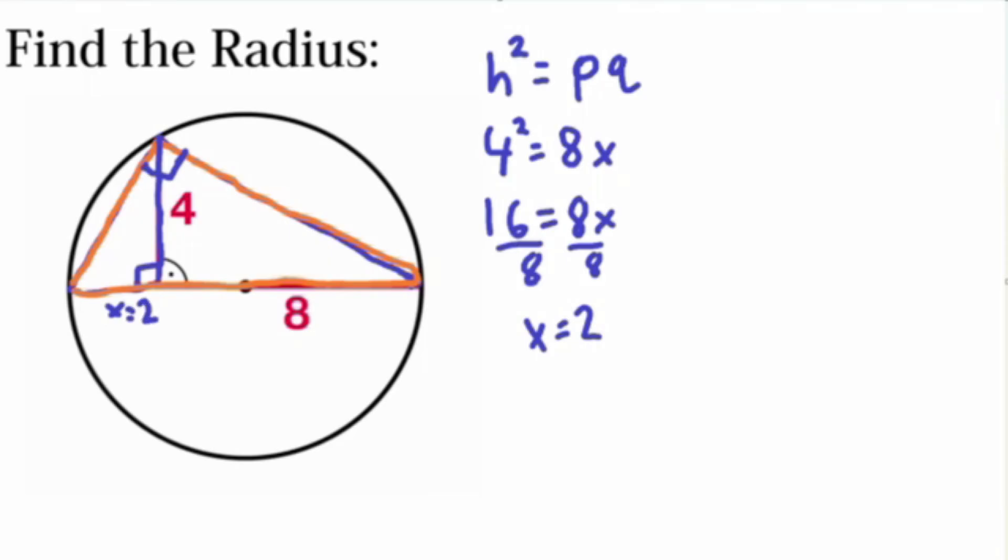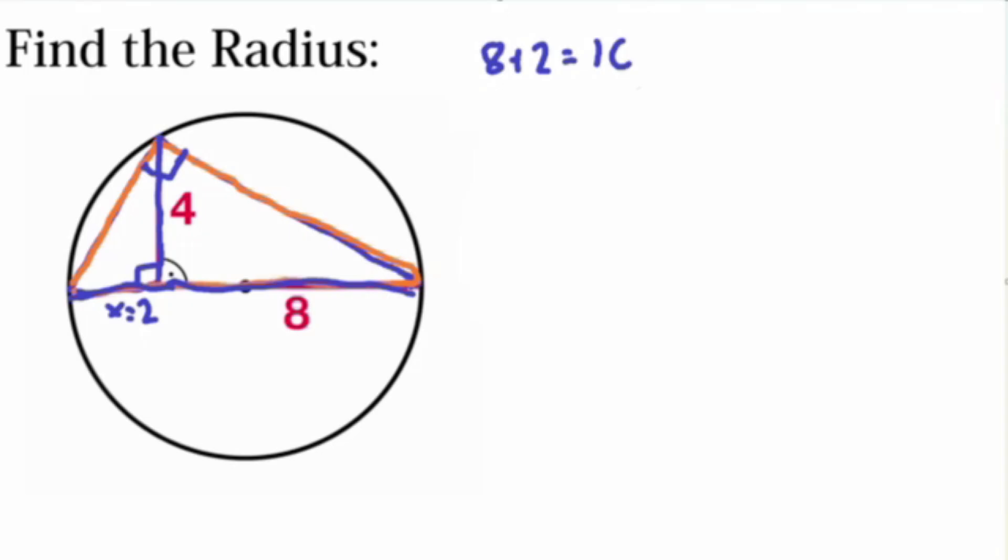Okay, so that is the key information that we needed to find, because now our answer and our glory is only seconds away. Because now we know the side length of this and this, so we simply add them together to find our diameter. So 8 plus 2 is equal to 10. So our diameter is equal to 10.